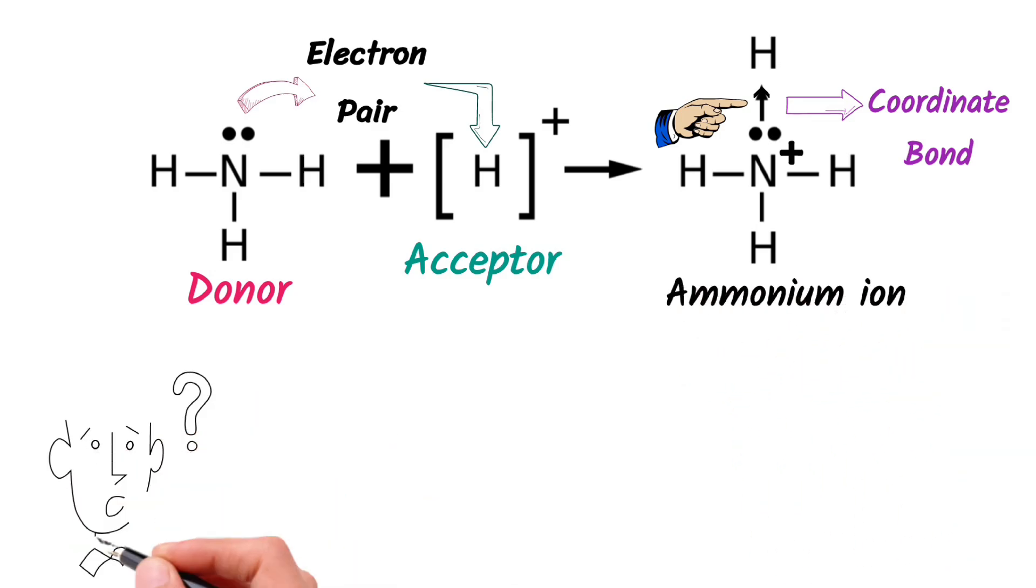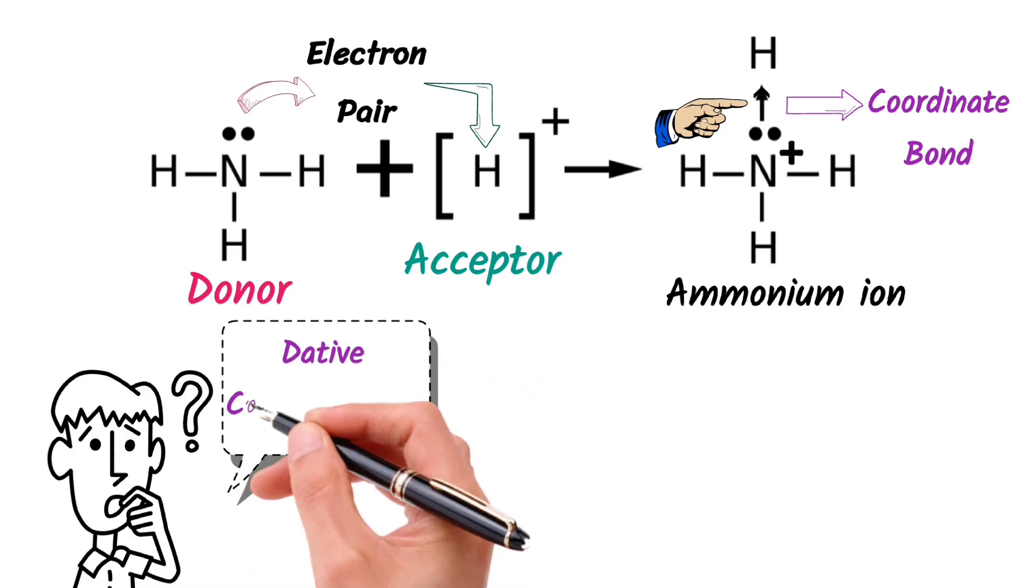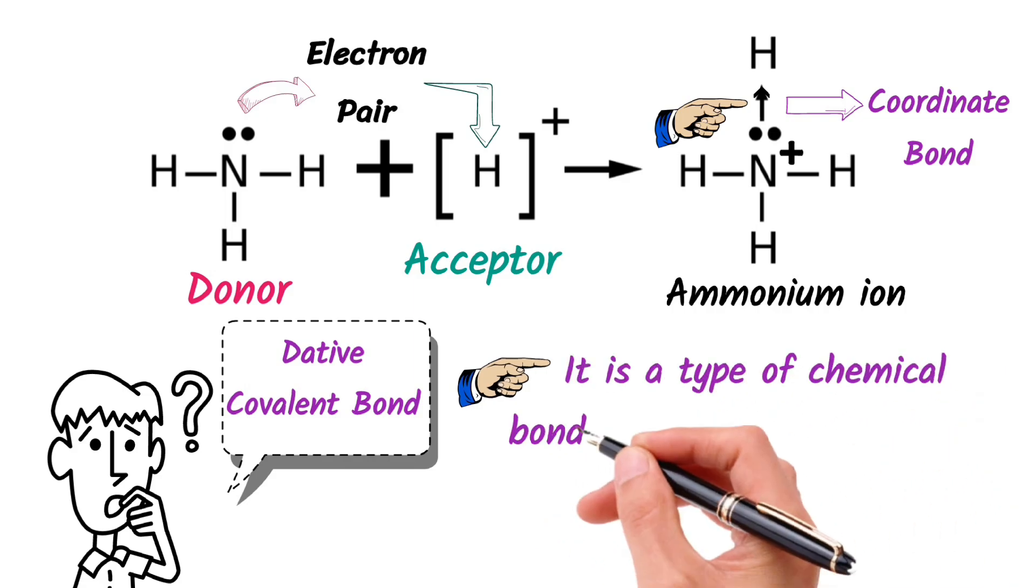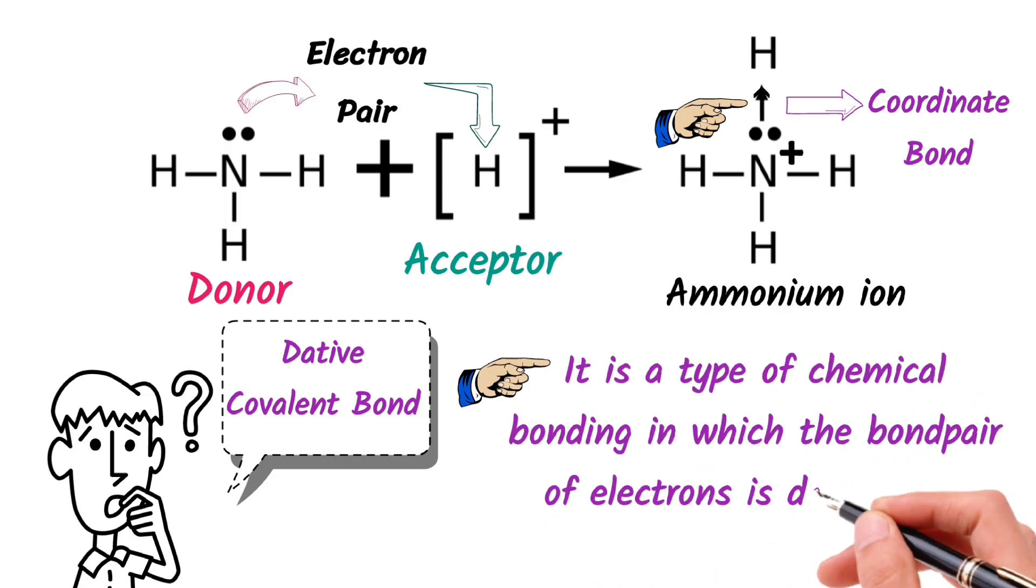Do you know my dear students, coordinate covalent bond is also known as dative covalent bond. So it is a type of chemical bonding in which the bond's pair of electrons is donated by one bonded atom only.